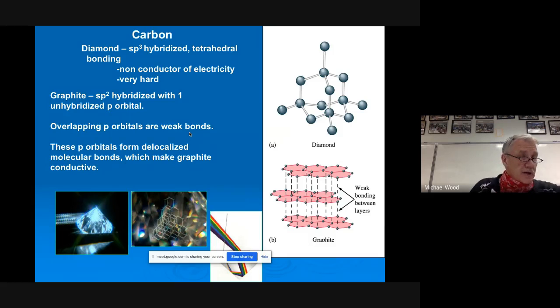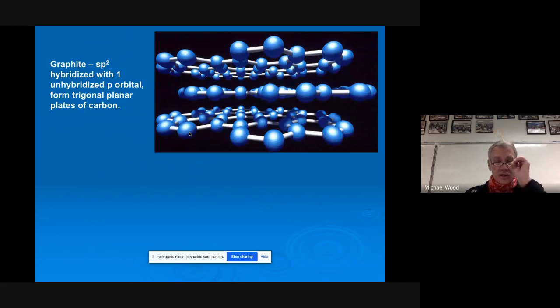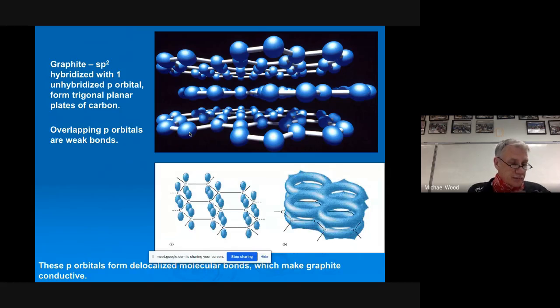Graphite, if you're writing with a pencil right now, you're writing with pure carbon. It's the picture on the bottom. It's sp2 hybridized with one unhybridized p. We've got three electron domains with one of those being a double bond. Its overlapping p orbitals are weak bonds. These p orbitals form delocalized molecular bonds, making graphite conductive. So graphite's a little bit different. Here's another picture of graphite and what happens in graphite.